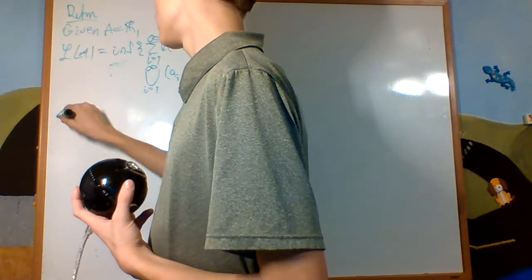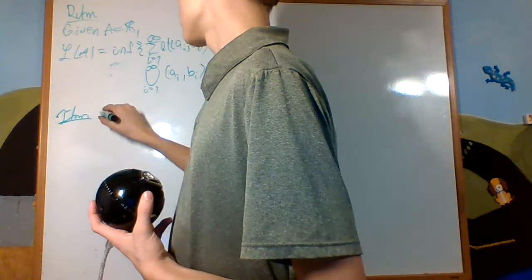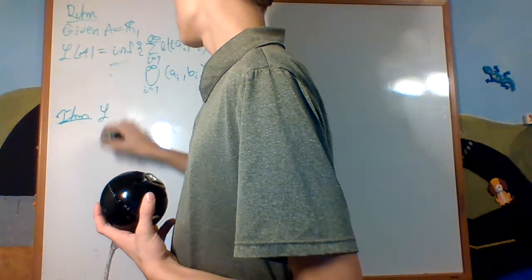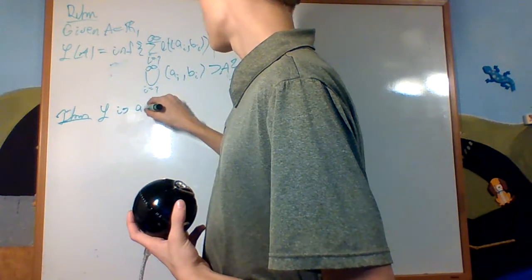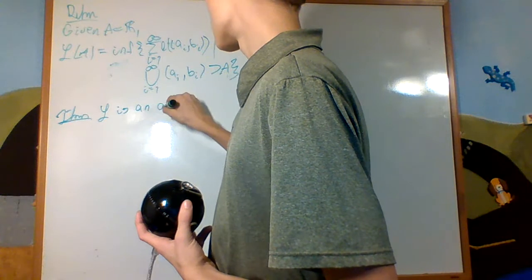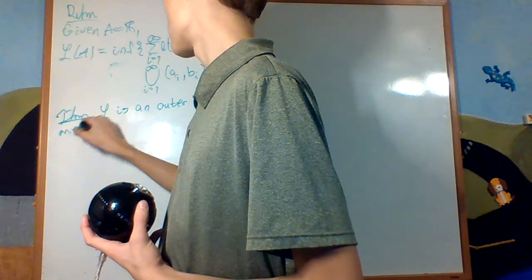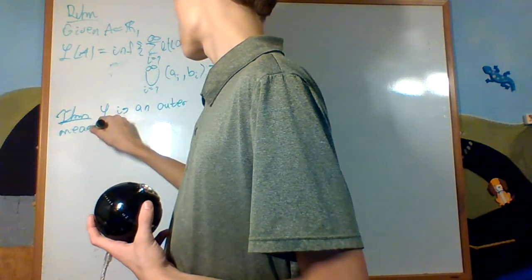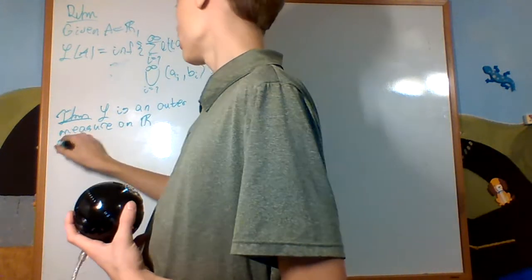Theorem: L is an outer measure on ℝ. And now the proof.